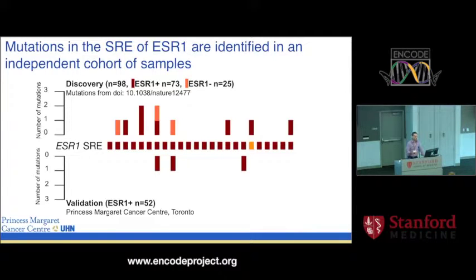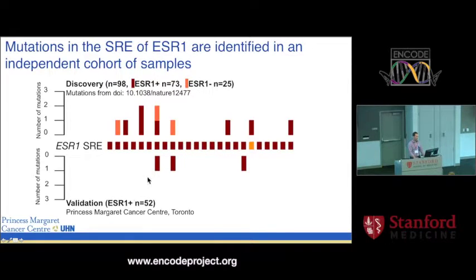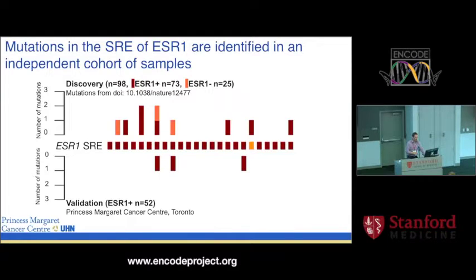We still wanted to confirm that the mutations from the discovery cohort were valid, or at least that the enrichment could be replicated in an independent cohort. We got access to 52 patients from the Princess Margaret Cancer Center — also ER-positive breast cancer patients — and did targeted sequencing within the predicted DHS sites regulating the ESR1 gene. We found three patients with mutations in DHS sites thought to regulate ESR1, corresponding to roughly a similar percentage of individuals as in our discovery cohort.